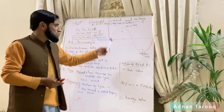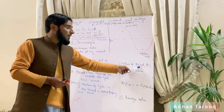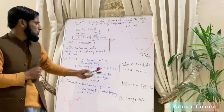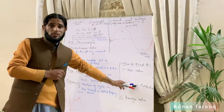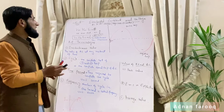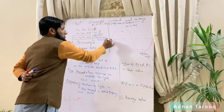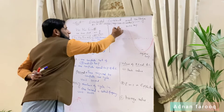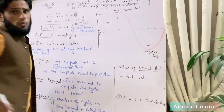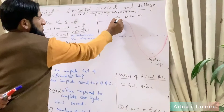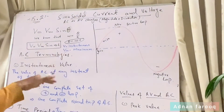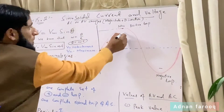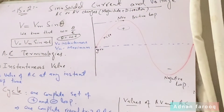Values of alternating voltage اور alternating current کتنی ہیں؟ تین values ہیں: ایک peak value، دوسری RMS یعنی effective value، تیسری average value۔ Sinusoidal current zero سے rise ہوتا ہے — positive maximum تک پہنچتا ہے — پھر falls ہو کر zero ہوتا ہے — پھر negative direction میں rise ہوتا ہے۔ یہ upper maximum point اور lower maximum point peak values ہیں۔